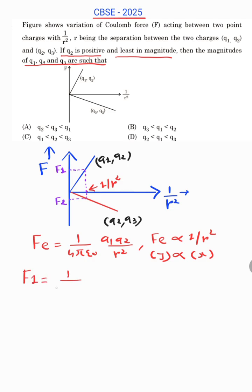Now here F1 is equal to 1 upon 4 pi epsilon naught, Q1, Q2 upon R square and F2 is equal to 1 upon 4 pi epsilon naught, Q2, Q3 upon R square. Now see the point here.